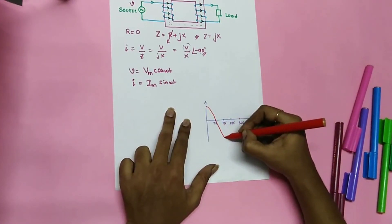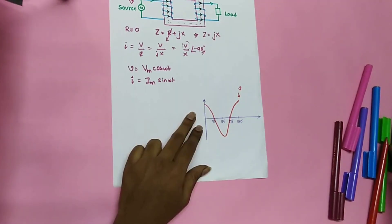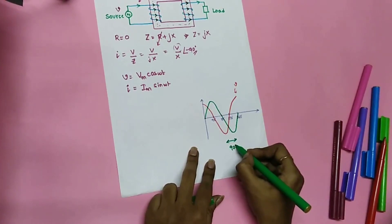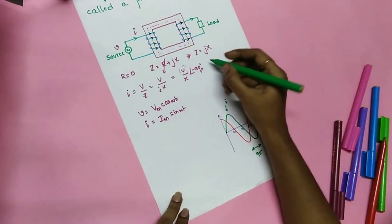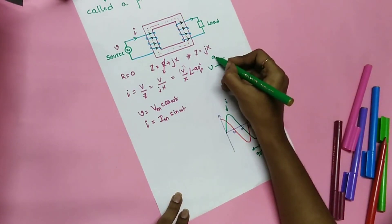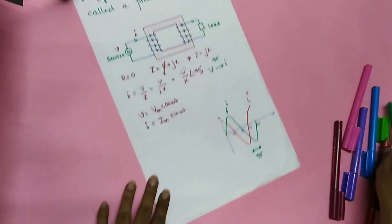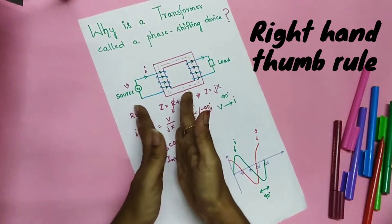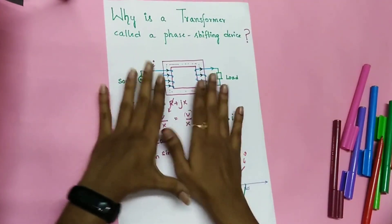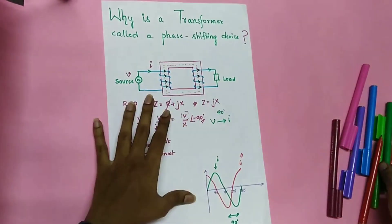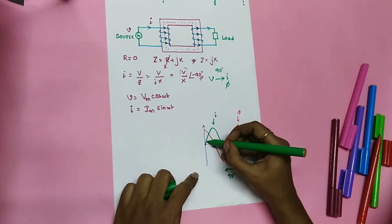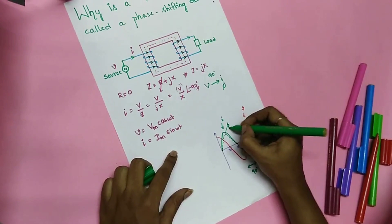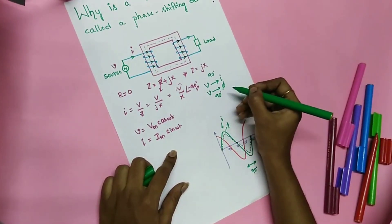Let us see this in a pictorial way. The voltage waveform is a cosine waveform, and the current waveform lags it by 90 degrees — there is a phase displacement of 90 degrees from V to I. The current flows in the primary winding, producing a flux whose direction is given by the right-hand thumb rule. This flux is in phase with the current.